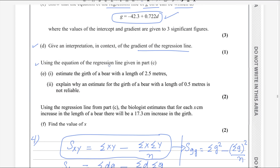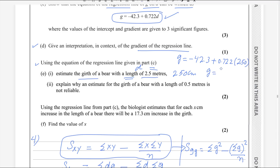Next part: using the equation of the regression line given in part C, estimate the girth of the bear with length 2.5 meters. 2.5 meters is 250 centimeters — just multiply by 100. As I told you, d is the length, so d equals 250 centimeters. If you use this value in the equation, you will get the estimate of the girth. So g equals minus 42.3 plus 0.722 times 250. Write this in your calculator and you get the answer for g as 138.2 centimeters. So this will be the estimated girth of the bear.